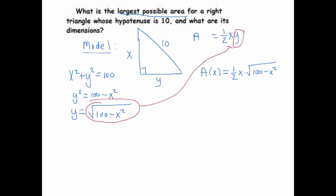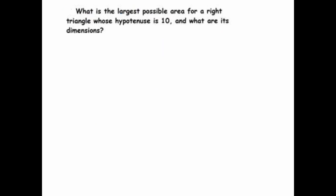That's our model. For the domain: x can't be zero or negative, so x > 0. We also need 100 − x² ≥ 0 to avoid taking the square root of a negative, which means x ≤ 10. And x can't actually equal 10 because then y would have no length and we wouldn't have a triangle. So the domain is the open interval (0, 10).